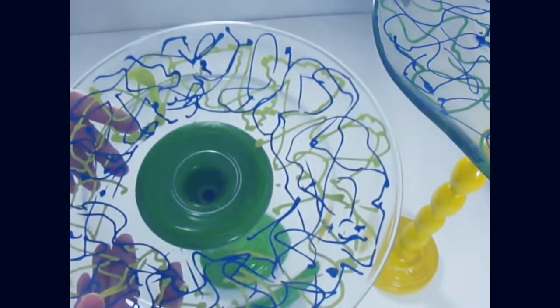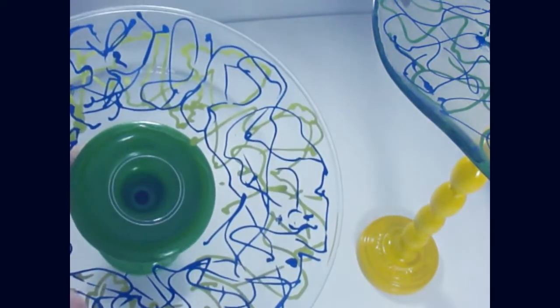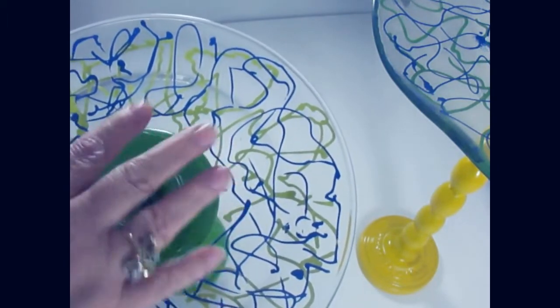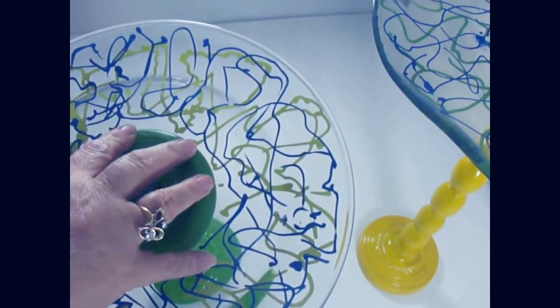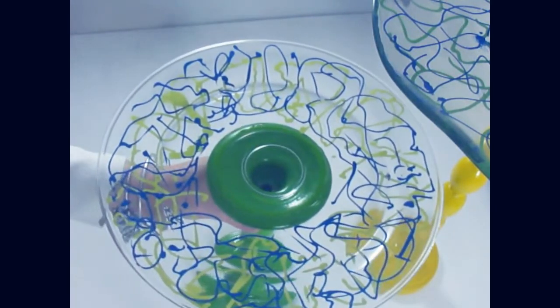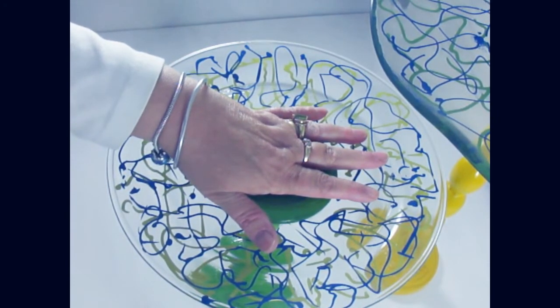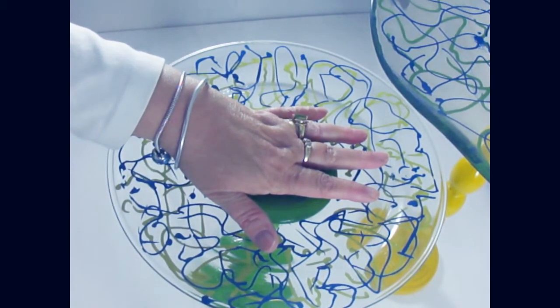Then I took the E6000 glue and glued just a little ring around the top of the candlestick, and then put these on top of the candlestick. Did the same thing with the serving tray one and put something on it to give it some pressure to really get it to glue nicely so that it'll be really durable.